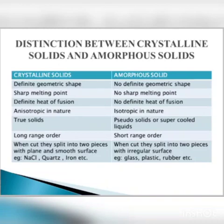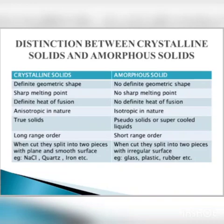Comparing crystalline and amorphous solids: crystalline solids are anisotropic in nature while amorphous solids are isotropic. Crystalline solids have a definite heat of fusion; amorphous solids do not. Crystalline solids are known as true solids; amorphous solids are known as pseudo solids or supercooled liquids. Crystalline solids have long range order; amorphous solids have short range order. Examples of crystalline solids are NaCl, quartz, and iron; amorphous solids include glass, plastic, and rubber.